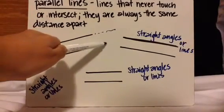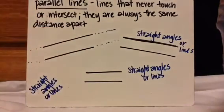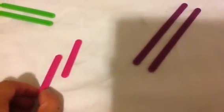Even if you extend them, they still won't touch. Here is an example of parallel lines — never going to touch, same distance apart. Here's another one: even though they're positioned at an angle like this, they are still parallel because when you extend them, they will never touch.